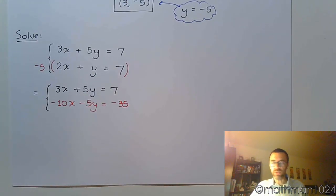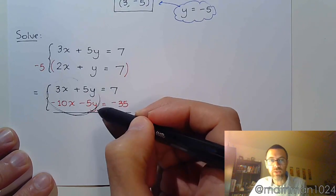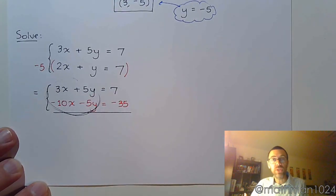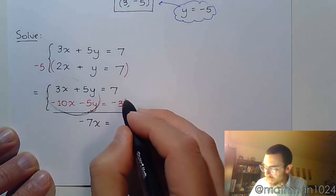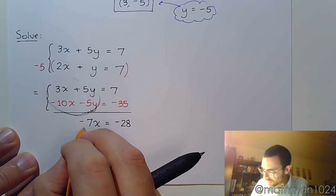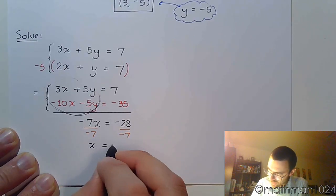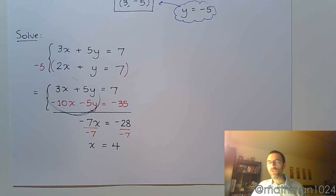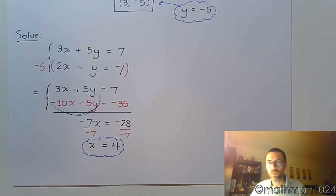So we manipulated this so that now when I combine everything here on the left side, look what happens to the y's. These guys are now additive inverses and they go to 0. 3x minus 10x is negative 7x. And combining the constants on the right side, I get negative 28. Divide both sides by negative 7. And x equals positive 4. So we had to do some manipulating here so that one of these variables would eliminate. It does. Now we have x equals 4.